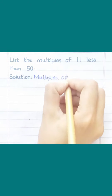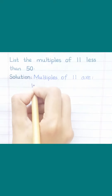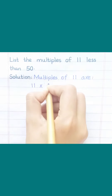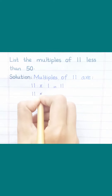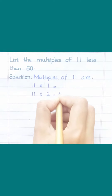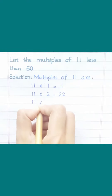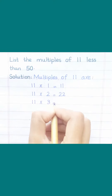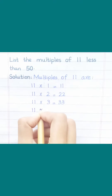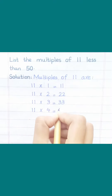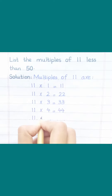Multiples of 11 are: 11 ones are 11, 11 twos are 22, 11 threes are 33, 11 fours are 44, 11 fives are 55.